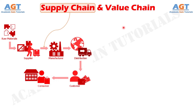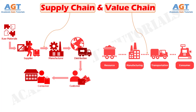Supply chain refers to the integration of all activities involved in the process of sourcing, procurement, conversion and logistics. On the other hand, value chain implies the series of business operations in which utility is added to the goods and services offered by the firm so as to enhance customer value.